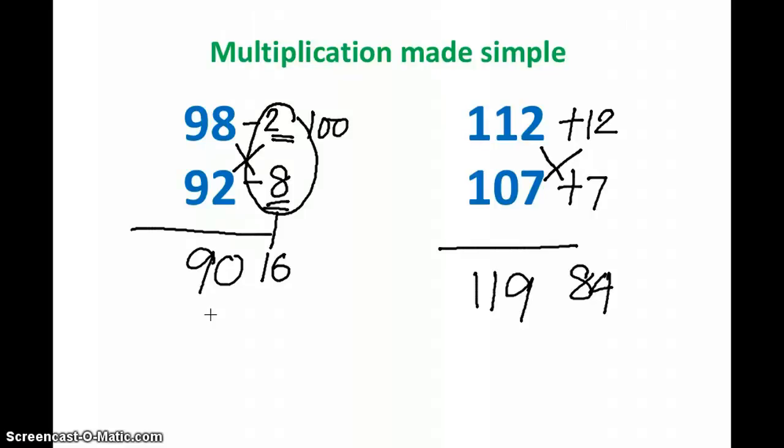The beauty of Vedic mathematics is sometimes it gives us the techniques to check if my answer is correct or not. Here you can see that 98 minus 8 gives me 90, and 92 minus 2 also gives me 90. So this way I can actually cross-check if I am missing something.